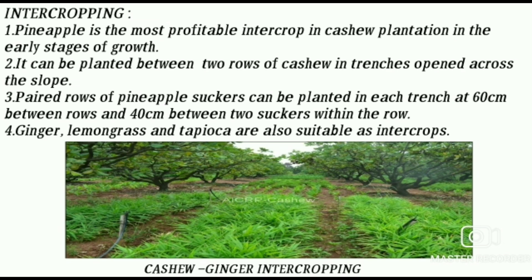Intercropping in cashew: pineapple is the most profitable intercrop in cashew plantations in the early stages of growth. It can be planted between 2 rows of cashew in trenches open across the slope. Paired rows of pineapple suckers can be planted in each trench at 60 cm between the rows and 40 cm between two suckers within the row. Ginger, lemongrass, and tapioca are also used as intercrops. In the picture, cashew and ginger intercropping is shown.